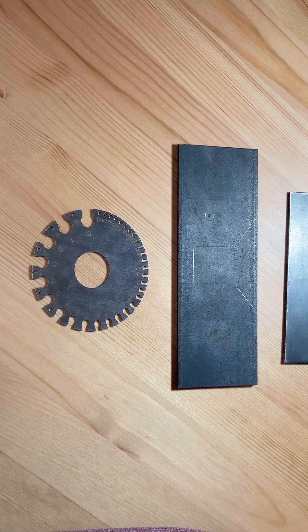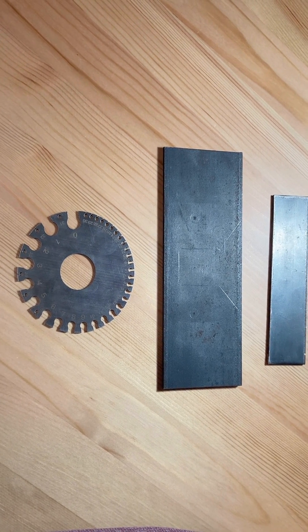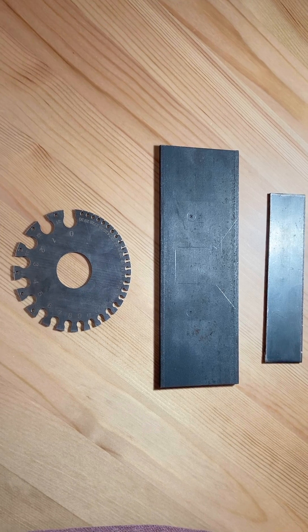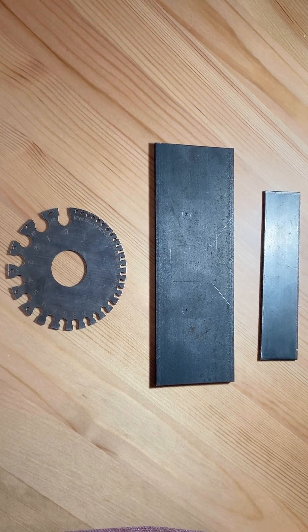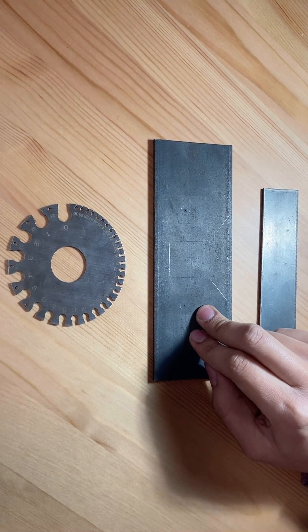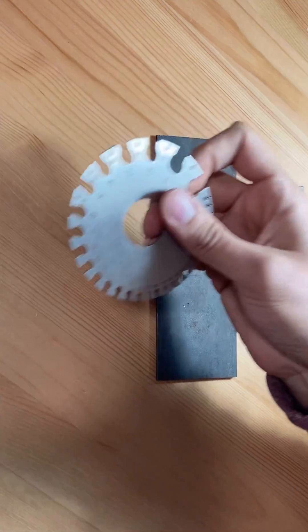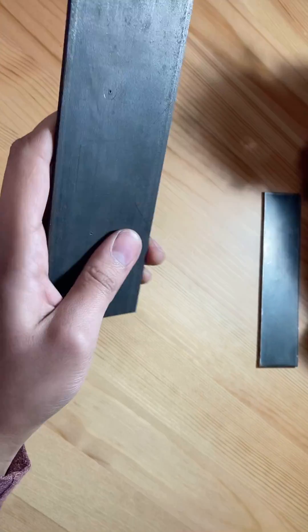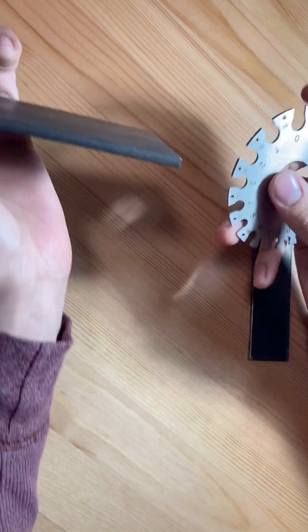Today I'm going to be showing the AWG gauge and how to measure sheet metal thickness. Let's say you have a piece of metal and you want to know the thickness of it. What you do is grab your AWG gauge, grab the sheet metal, and start sliding it into the slots.